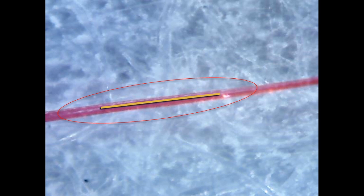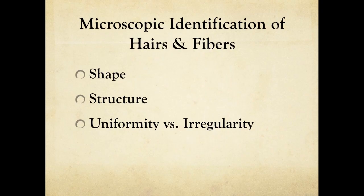From these images, you should be able to get a sense of the wide variety of fiber shapes. Through this lesson, you have learned that hairs and fibers can be easily identified and distinguished by their shape, structural features, and degree of uniformity or irregularity.